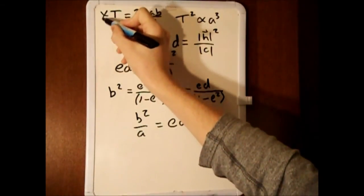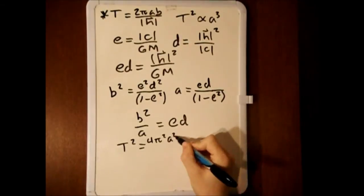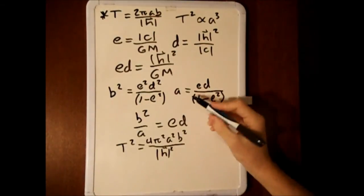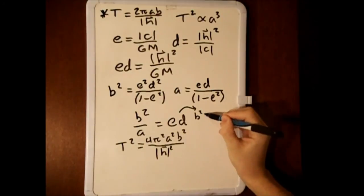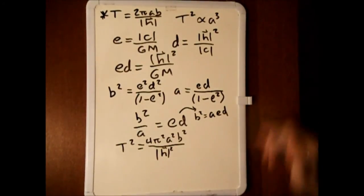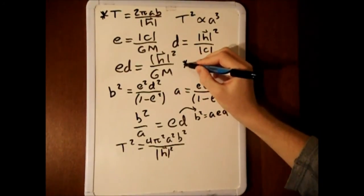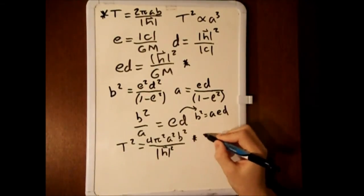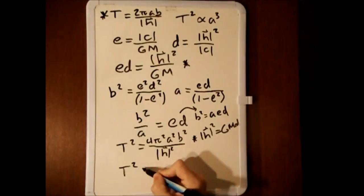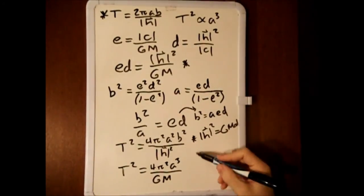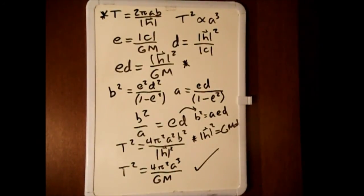Squaring our original equation up at the top, rearranging this equation here for b squared, and finally rearranging this equation over here, substituting everything into the equation, proves Kepler's third law.